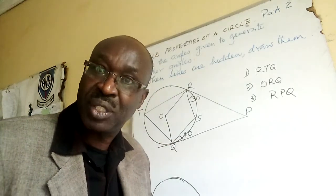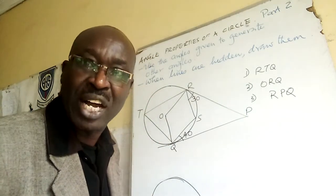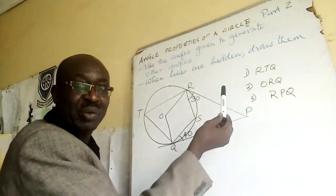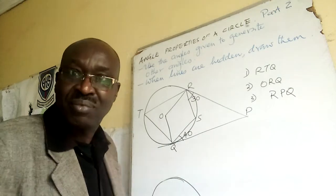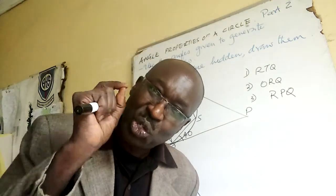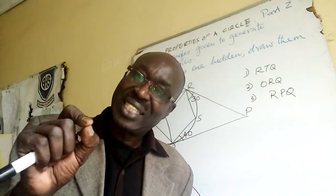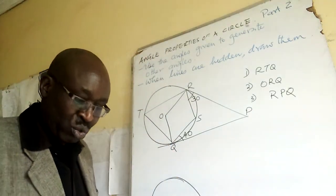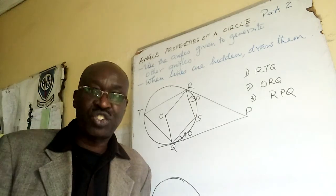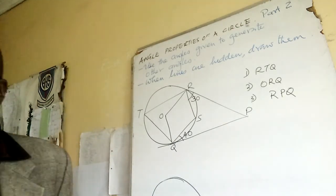If you look at the diagram, there is a tangent. There is another tangent. Automatically he is testing you on alternate segment theorem.